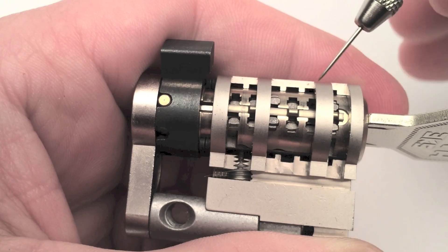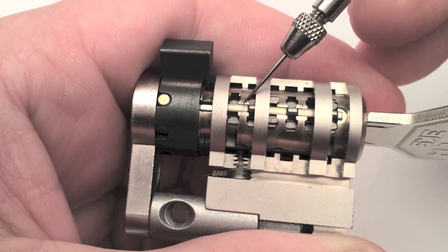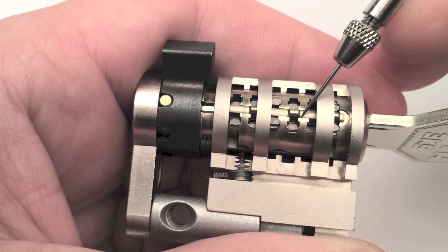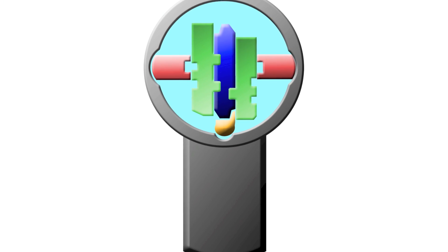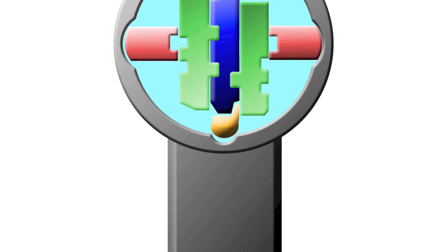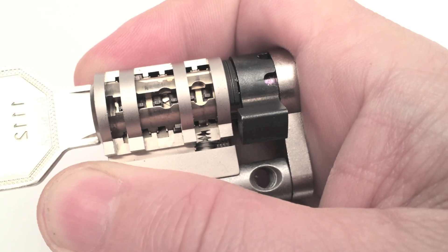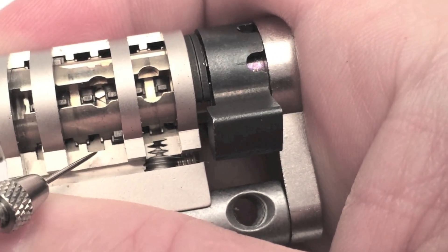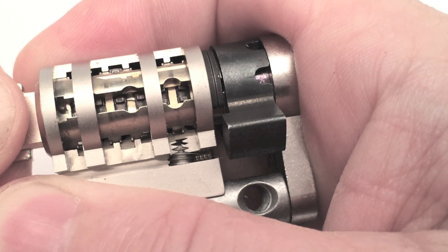Now we take a close look at the bottom bar. Here is the bottom bar in yellow. The core will not turn when the cuts in the key don't fit the bottom bar.